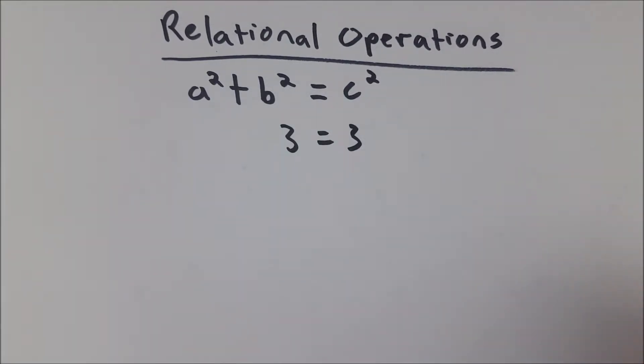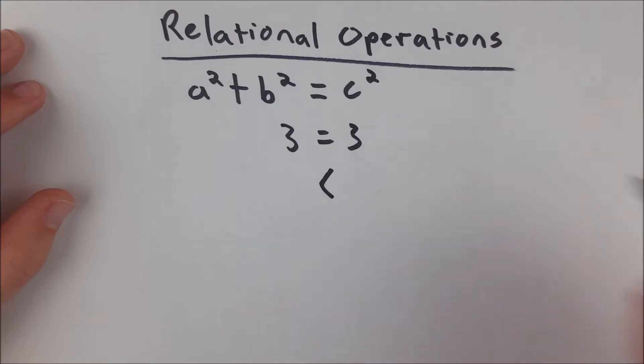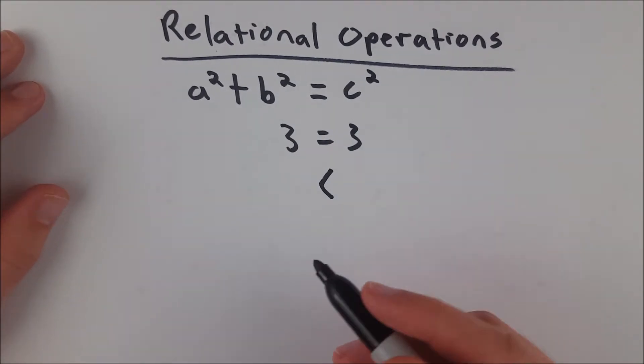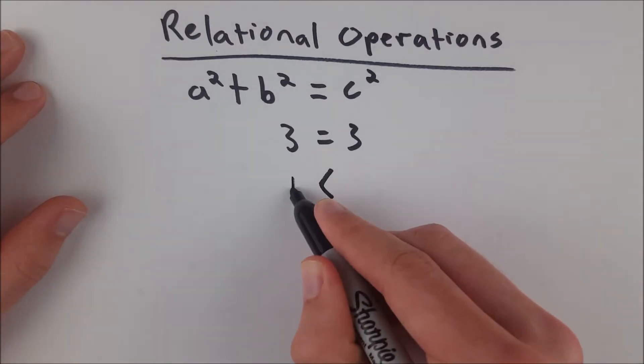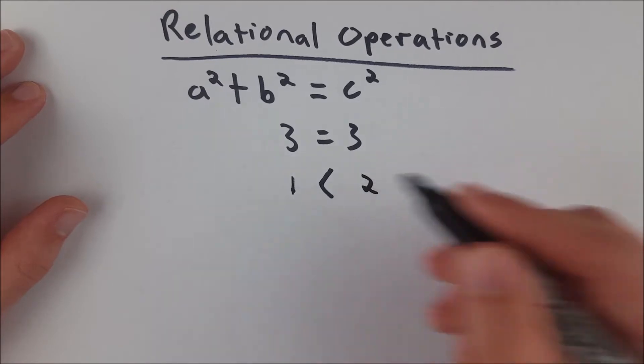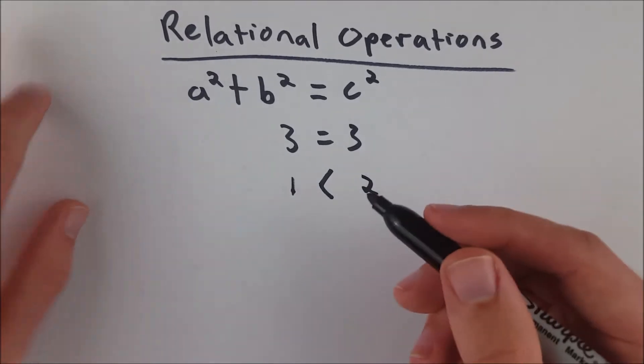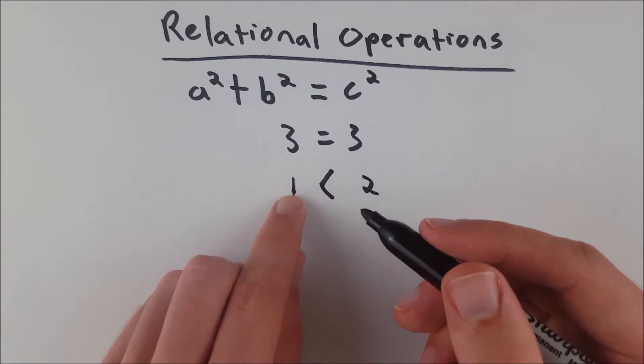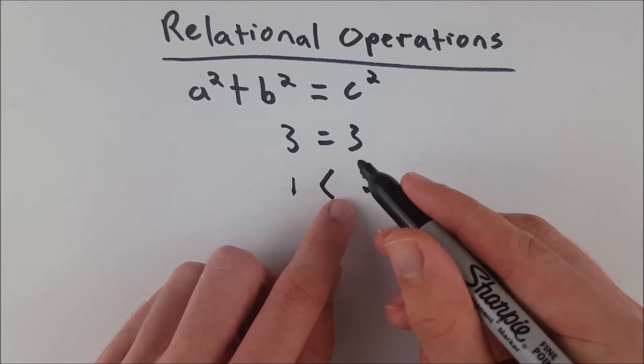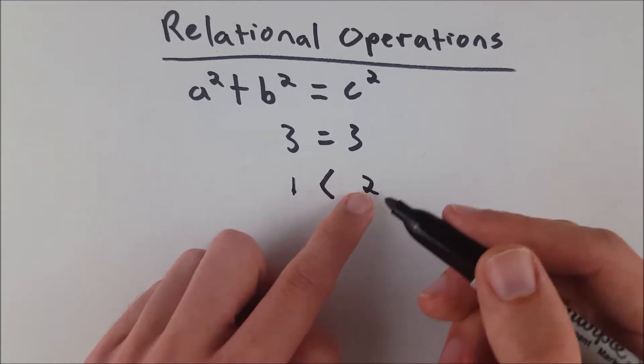Now another relational operation is less than. And this less than sign can be used to say that one quantity is less than another. One of course is less than two. You can see the small acute sort of point end is on the small side and the larger open end is on the big side.